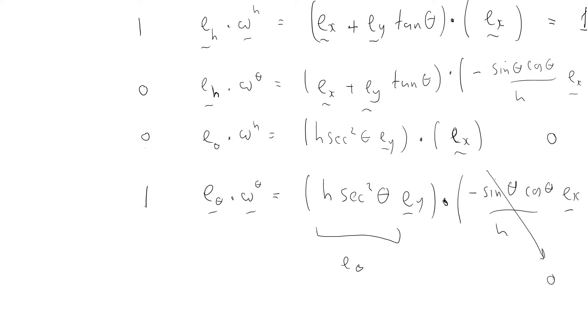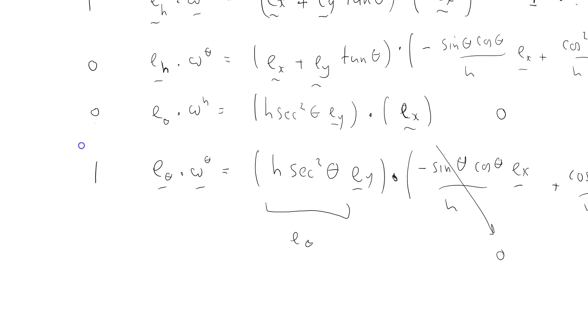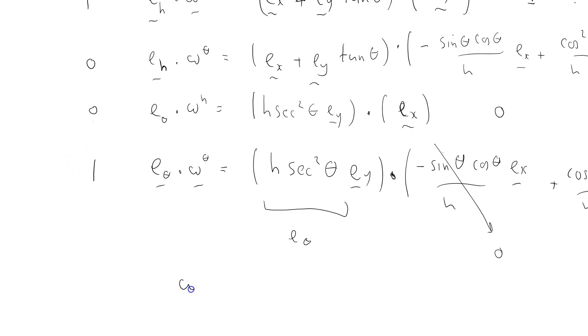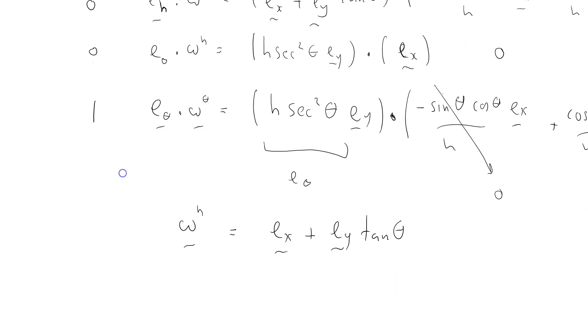So it's an inverse basis to the e's, which is nice. Let me just write them out again and we'll just have a think about them. Omega h equals e_x, and omega theta equals—sorry, omega h equals e_x plus e_y tan θ, and omega theta equals h sec²θ e_y. I'm going to stop there and talk about it in the next screencast.